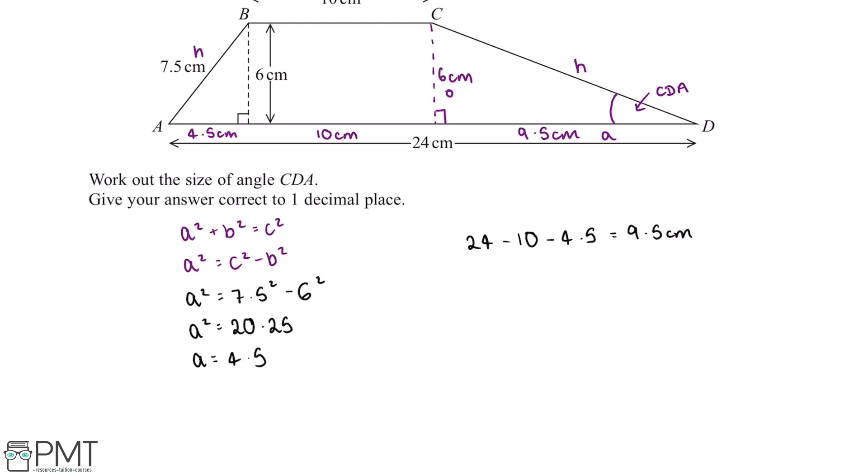So the formula we'll want to use is tan x is equal to the opposite over adjacent. So if we substitute the values we've got in our triangle into this equation, it tells us that tan x is equal to 6 divided by 9.5.